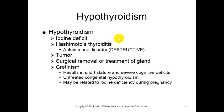Then we have hypothyroidism. Causes include iodine deficiency making it impossible to produce T3 and T4, Hashimoto's thyroiditis where the immune system attacks and destroys the thyroid, tumors, and surgical removal or treatment of the gland. During early development, hypothyroidism can cause cretinism, which results in very short stature and severe cognitive defects. This untreated congenital hypothyroidism may be related to iodine deficiency during pregnancy. Treatment with T3 and T4 can help alleviate symptoms if caught early.